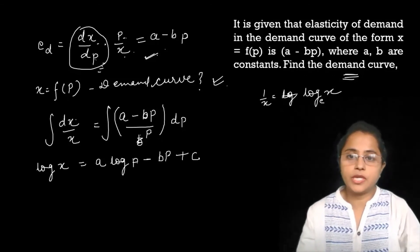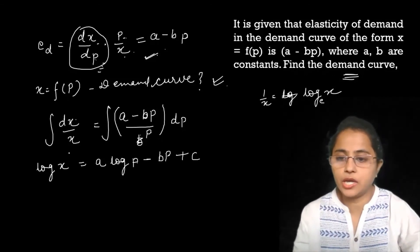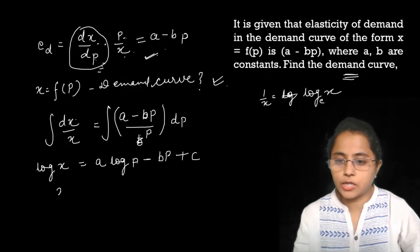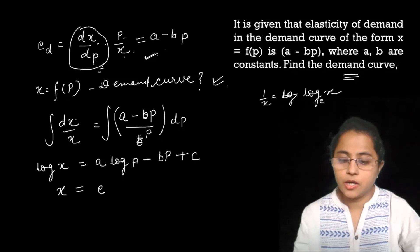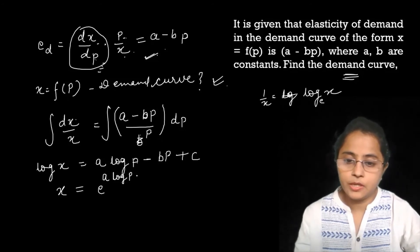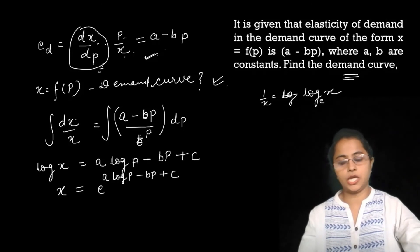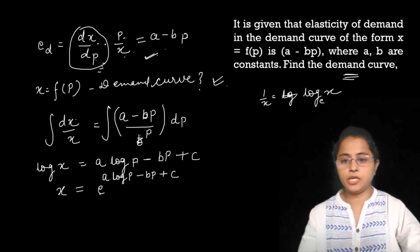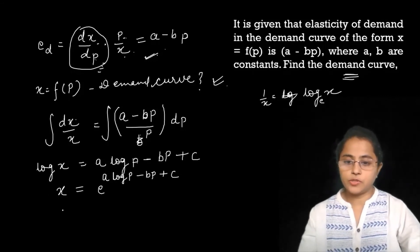We have log x, but we need x in terms of the result. So to convert, if we take e to the power of both sides — using log base e — the log is removed. So we get: x = e raised to (a·log p − b·p + c).